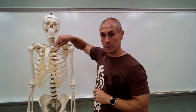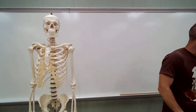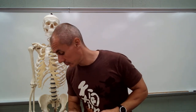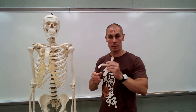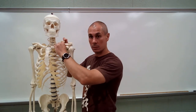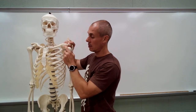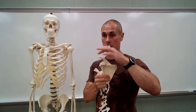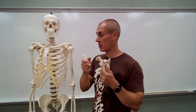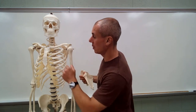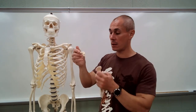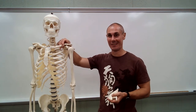This is the clavicle. The clavicle articulates with the sternum and with the acromial process — the acromial process of the scapula. You can tell which end of the clavicle articulates with what: the sternal end is pretty blunt, and the acromial end is much more flat.